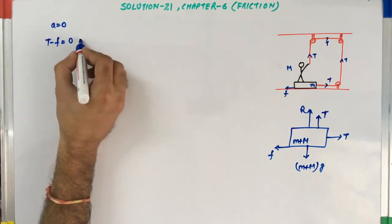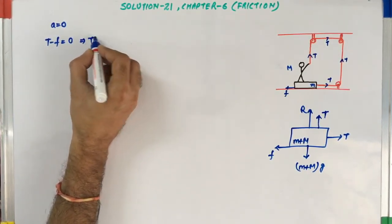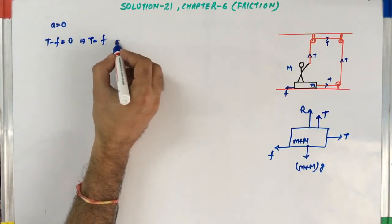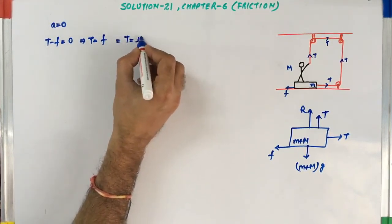So that means it is zero. This implies T is equal to F. Now putting the value of frictional force which is T is equal to mu into R. Let's say this is equation 1.